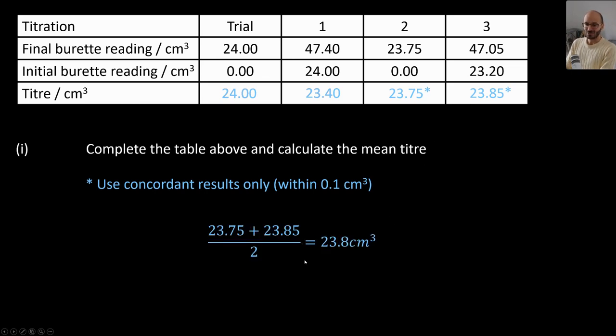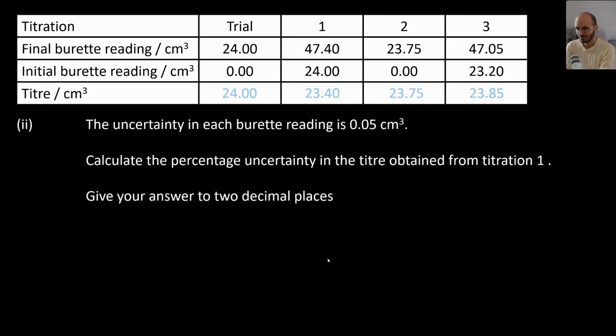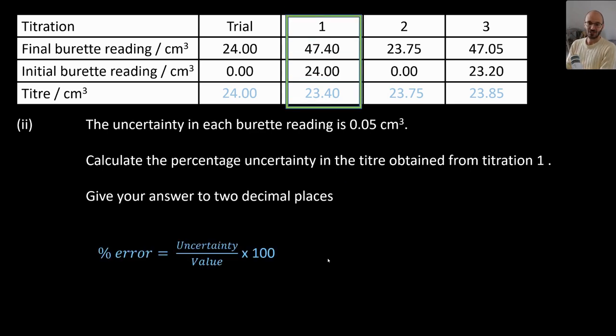Okay, what about percentage uncertainty? The definition of percentage uncertainty is this one: it's the actual error or uncertainty over the value. So that will be for the titration one.